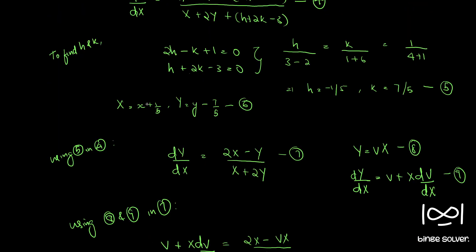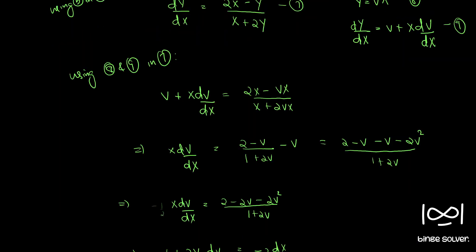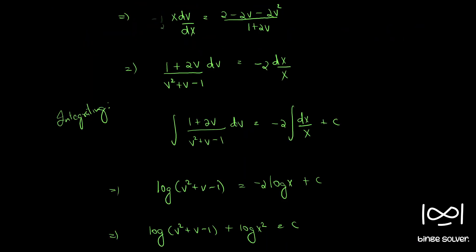Now from Equation 6 we substitute back: capital X equals x minus 1/5, i.e., (5x minus 1)/5, and capital Y equals y minus 7/5, i.e., (5y minus 7)/5.